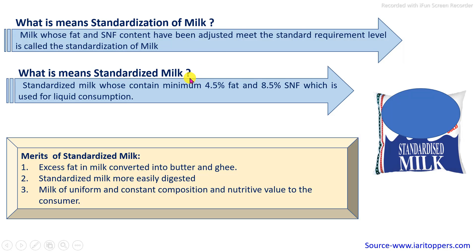Standardized milk is the intermediate milk between toned milk and full cream milk, in which the minimum fat content requirement is 4.5% and 8.5% SNF. Whatever milk contains excess fat is used to convert it into butter and ghee. Standardized milk is more easily digested, with intermediate fat content and SNF, making it useful for the production of some specific food products.